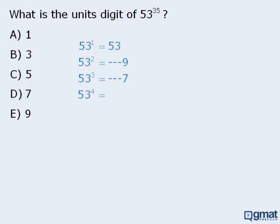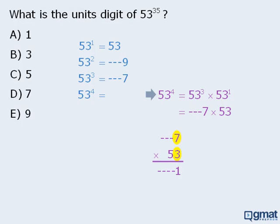To find the unit's digit of 53 to the power of 4, we must recognize that 53 to the power of 4 is equal to 53 cubed times 53 to the power of 1. Now 53 cubed has a unit's digit of 7, and 53 to the power of 1 is 53. To find the unit's digit of this product, we are only concerned with the product of the two unit's digits. 3 times 7 equals 21, so the unit's digit of 53 to the power of 4 is 1.